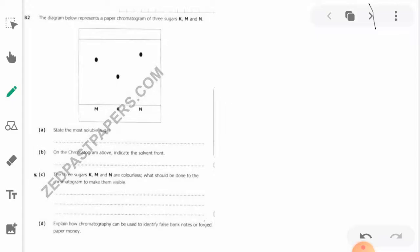The sugars are K, M, and N. You can see the diagram properly. The question says state the most soluble sugar. So we have sugar M, K, and N. Which one is the most soluble sugar in this case?